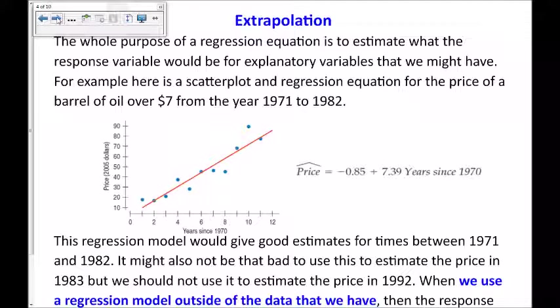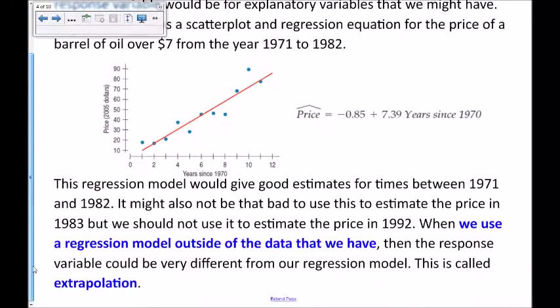This regression model would give good estimates for times between 1971 and 1982. It might also not be that bad to use this to estimate the price in 1983 but we should not use it to estimate the price in 1992. When we use a regression model outside of the data that we have, then the response variable could be very different from our regression model and this is called extrapolation. So predicting a model outside of what we have data for is called extrapolation.